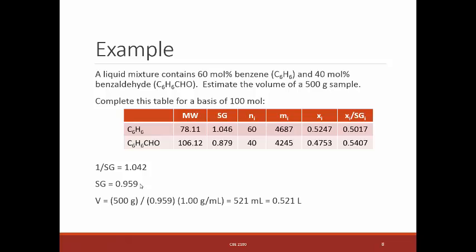And now then I can use that with 1 gram per milliliter to come up with the density of this mixture. 500 grams divided by 0.959 grams per milliliter, and this will be a 521 milliliter sample.